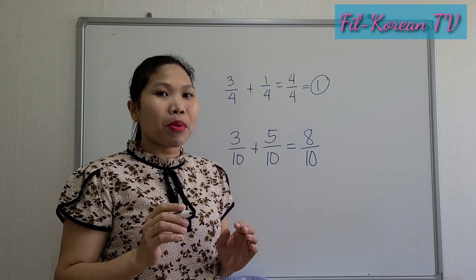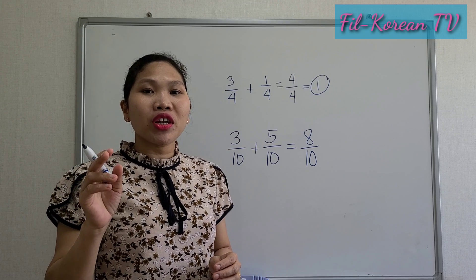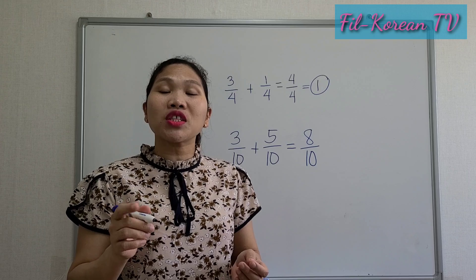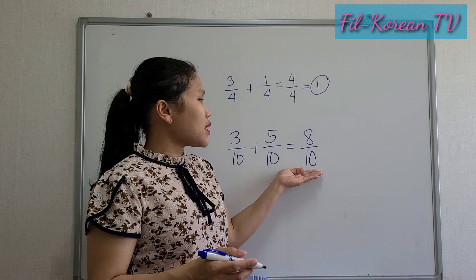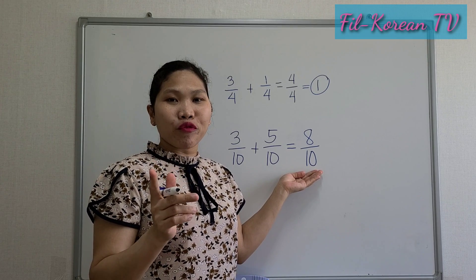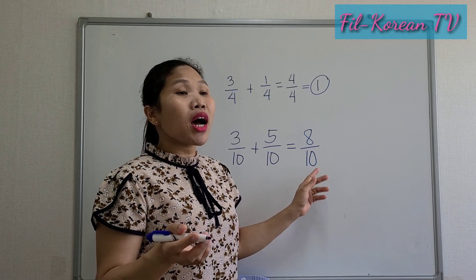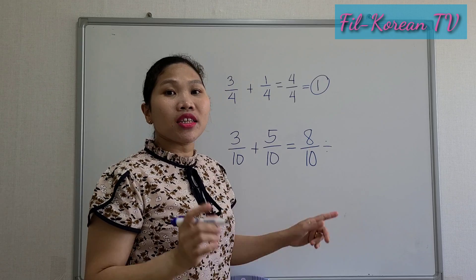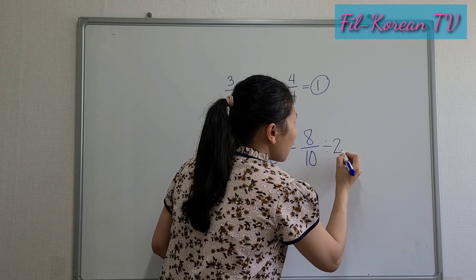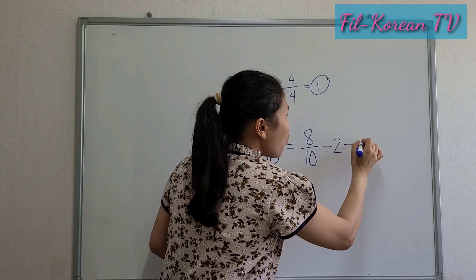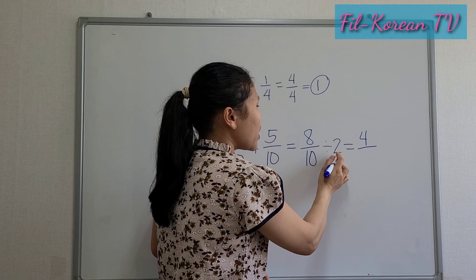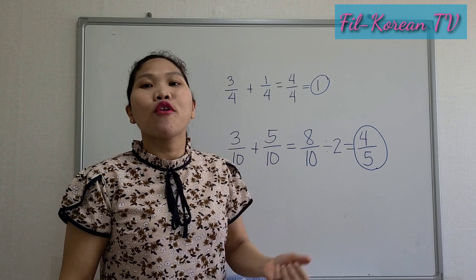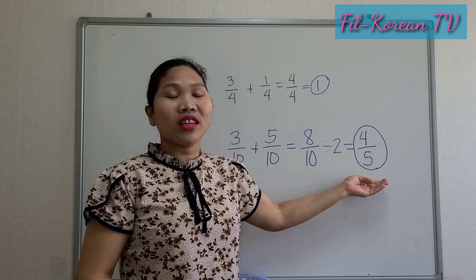Eight-tenths is a proper fraction — a fraction with a numerator less than the denominator; eight is less than ten. The next step is to reduce the answer to lowest term. We get the GCF — the greatest common factor of the numerator and denominator — and divide them by it. The GCF of eight and ten is two, so we divide: eight divided by two equals four, ten divided by two equals five. Therefore, three-tenths plus five-tenths equals four-fifths. This is the final answer, in lowest form.